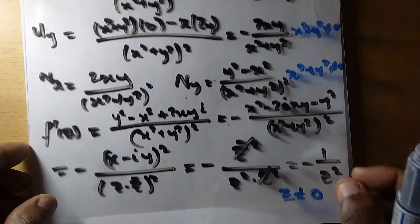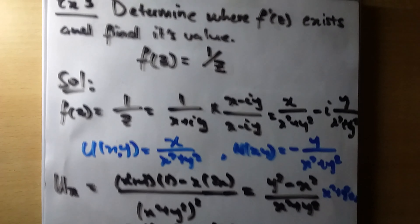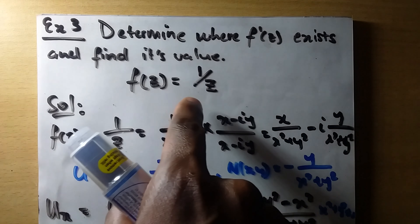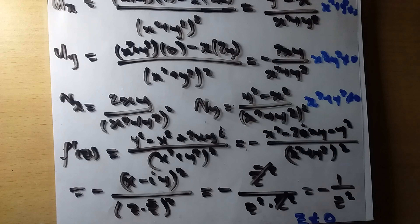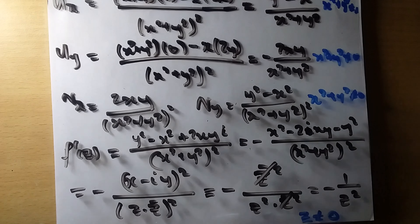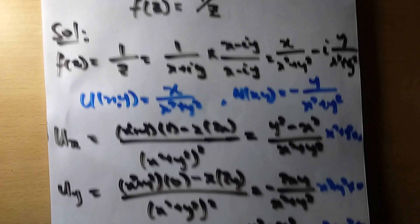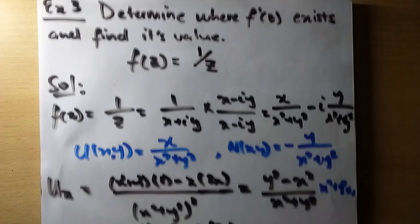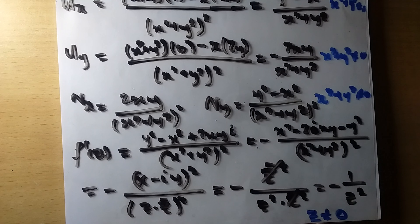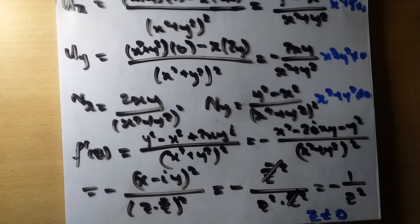Since this is the only solution we have, our complex number z should not be equal to zero, and that concludes our solution. The derivative of f(z) = 1/z equals negative 1 over z², where z ≠ 0. To answer the question of where the derivative exists: it exists everywhere except where z equals zero.